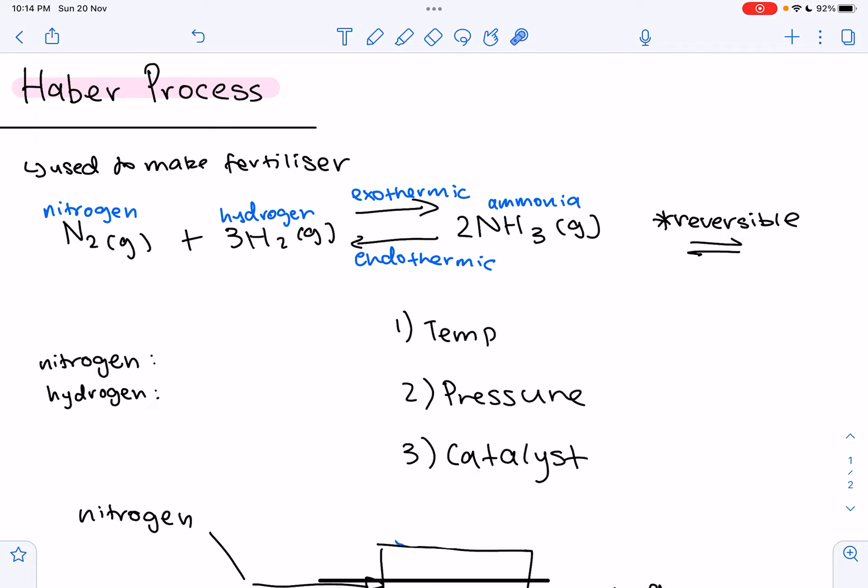As you can see, we have nitrogen gas plus hydrogen gas gives us ammonia gas. So what are these two arrows talking about here? We have an arrow going this way and this way. So this means the reaction is reversible.